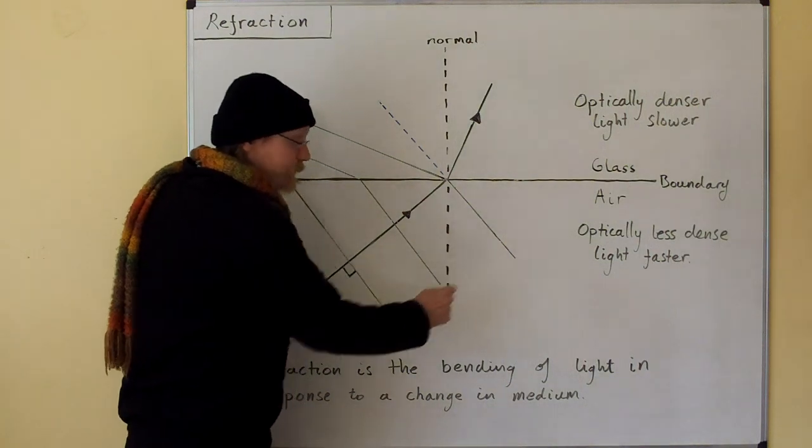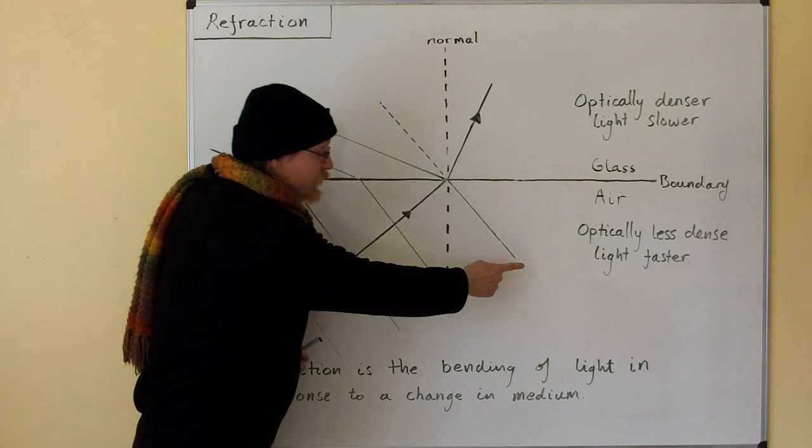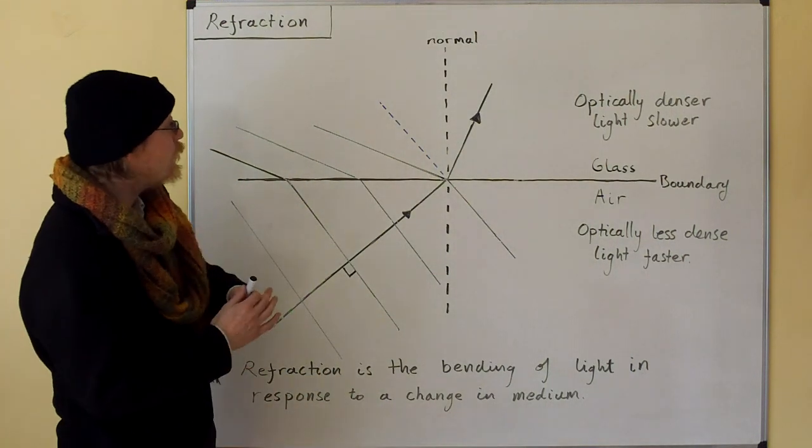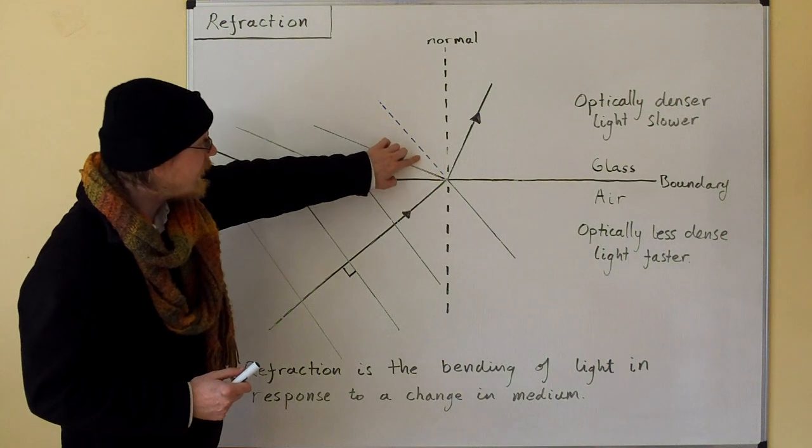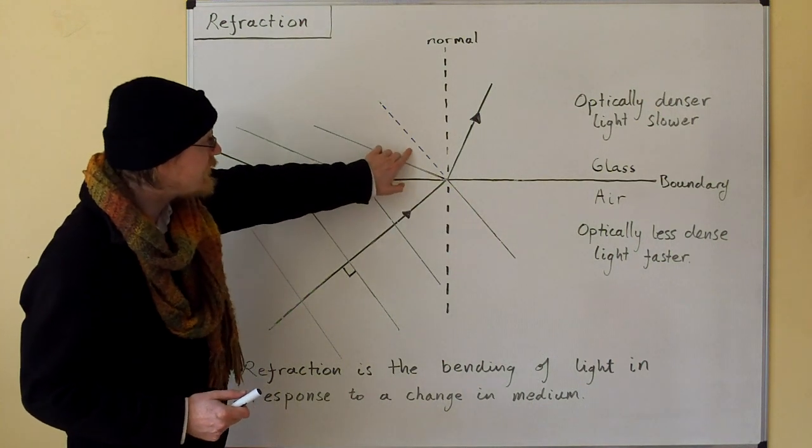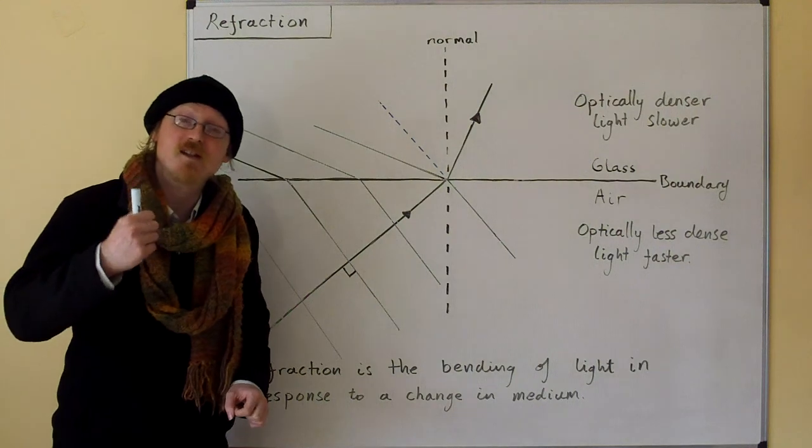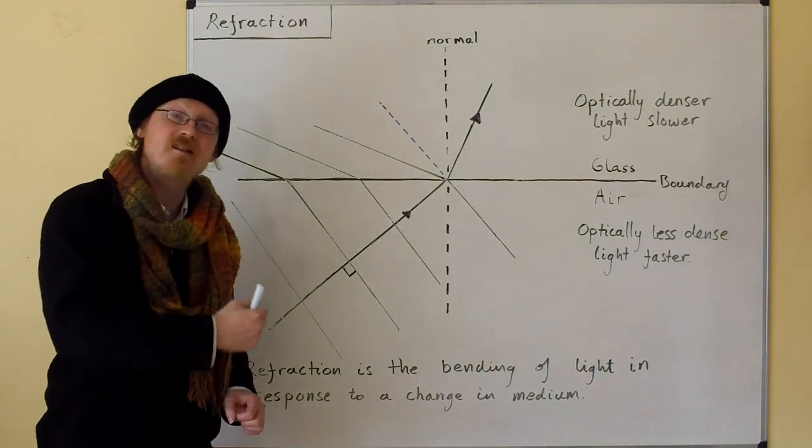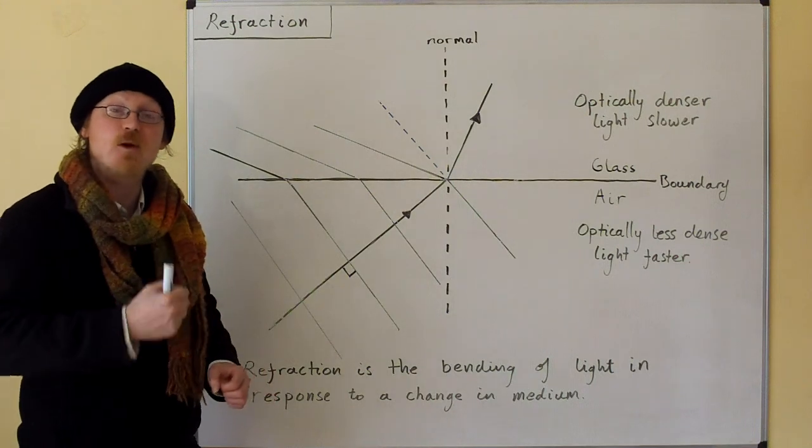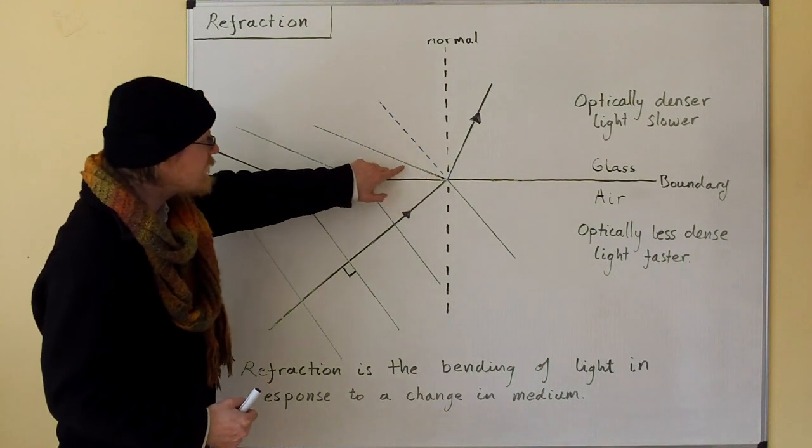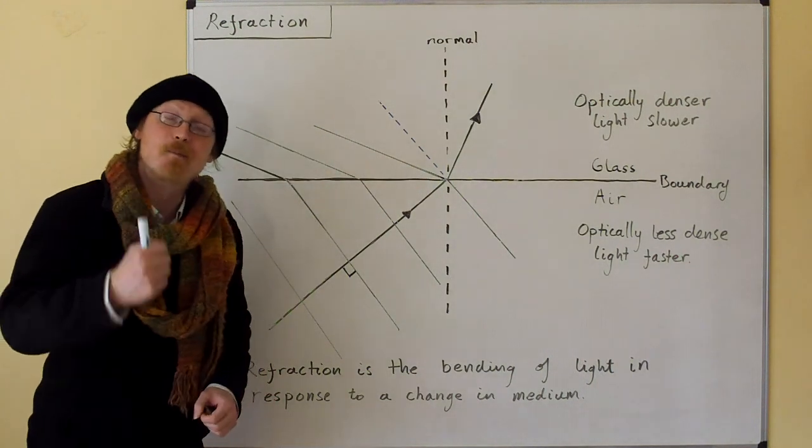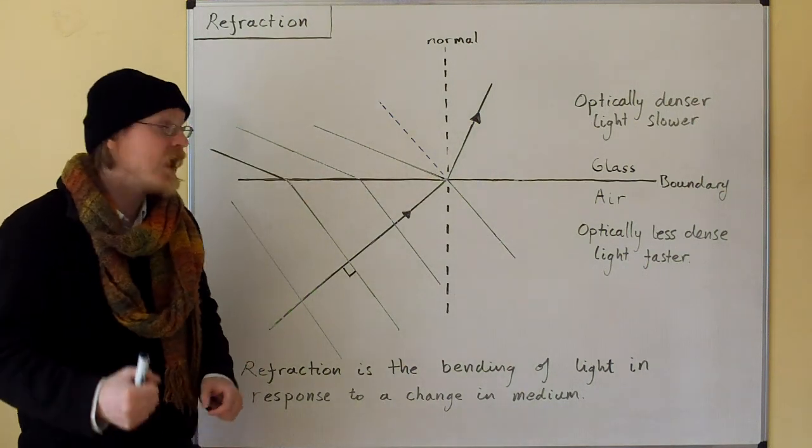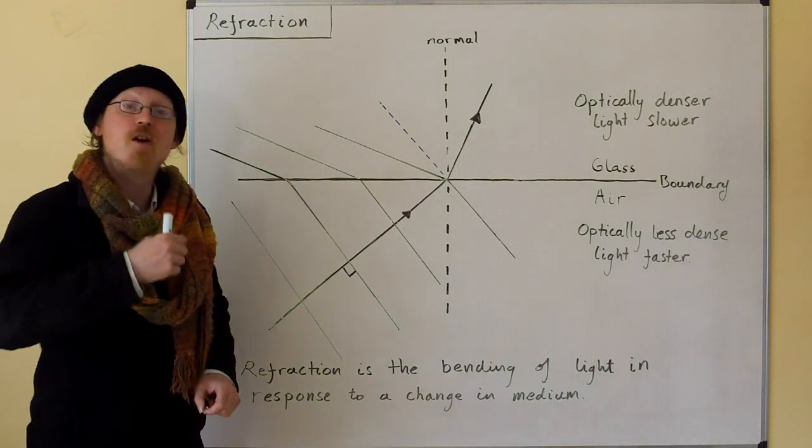Now, in order to understand what's happening, I want you to look at this wave front here. If this wave front had continued in air, it would have got to this dotted line. But it's not—it moves into the glass, which means it slows down, which means it doesn't get as far. It gets bent backwards. All of the wave fronts, because they're slowing down, get bent backwards to where they would have been if they'd carried on in the air.